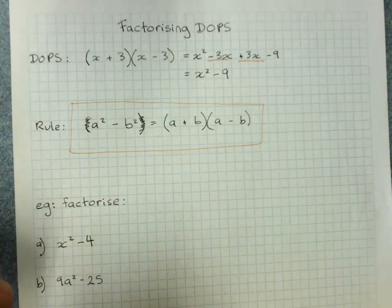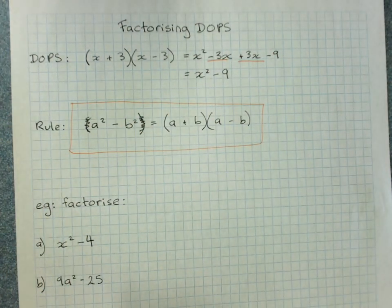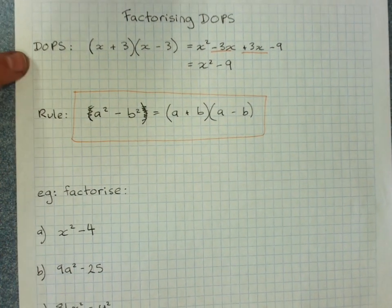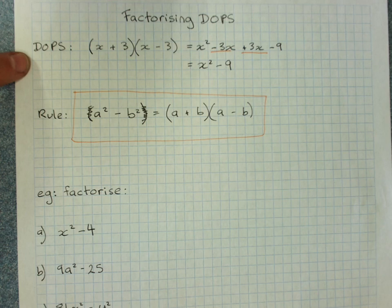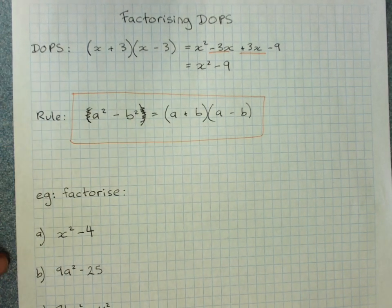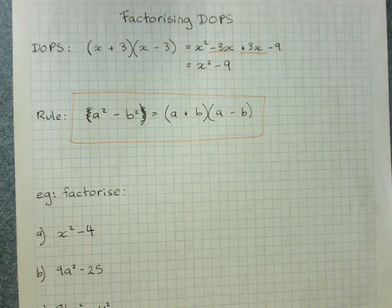That is our big important rule. So I don't need to see working for most factorizing of the difference of perfect squares because you can just apply the rule, recognize that it's the difference of perfect squares, and factorize.